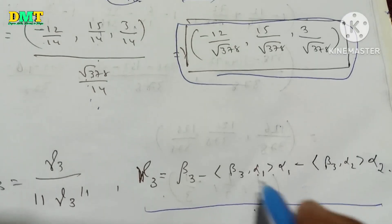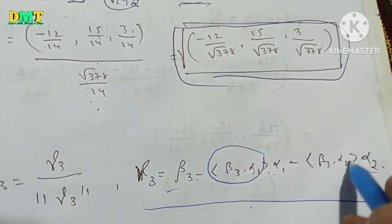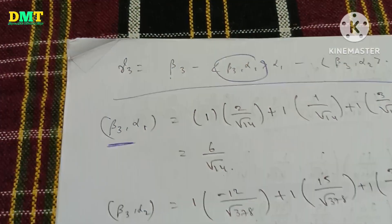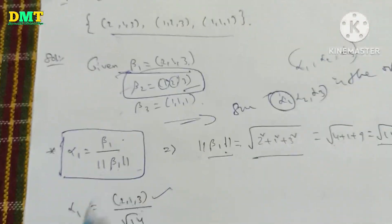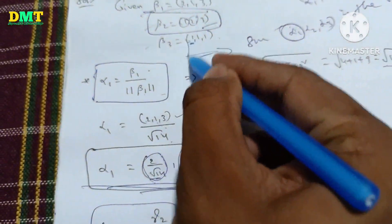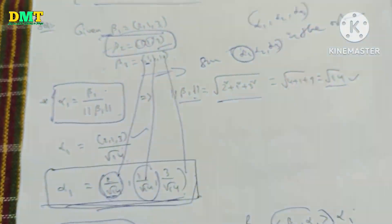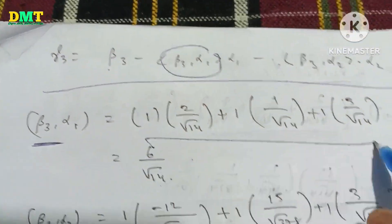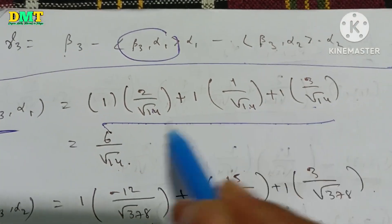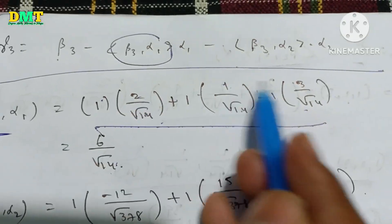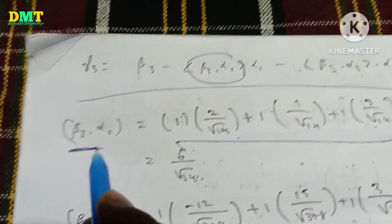So beta3, alpha1, and alpha2 are equal. First, we will find out. The formula is: first, beta3 comma alpha1. Let's check. Beta3 comma alpha1 is beta3's first value times alpha1's first value, and we will multiply each component. The value is like fractions over root14. The sum is 2 plus 1 plus 3 equals 6, so beta3 comma alpha1 is 6/root14.